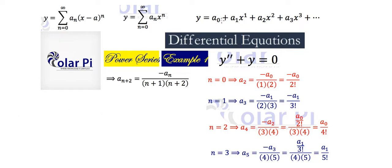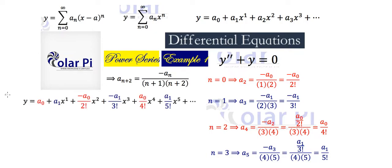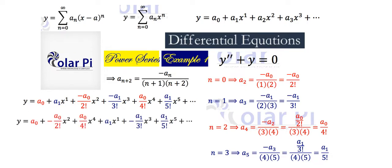Using this, we can rewrite our solution y. There are obviously an infinite number of terms not written — like terms involving x to the sixth, x to the seventh, and so on. I've intentionally highlighted in red all the terms involving even exponents of x, and in blue all the terms involving odd exponents of x. If we group all the even ones together and all the odd ones together, we'd have this.